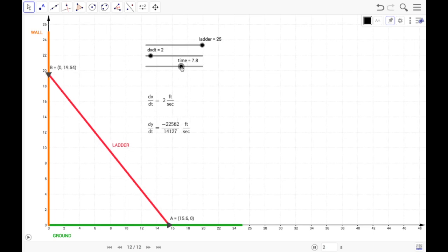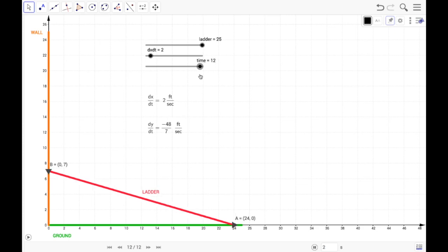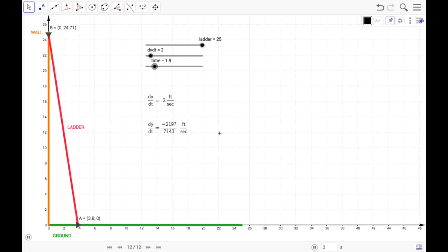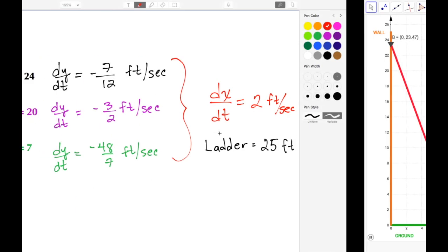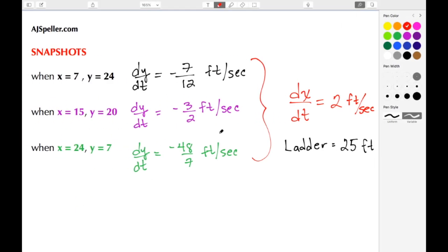So we come over, we want to set this all the way over to 24. And here we see that the x value is 24, the y value is 7, and we see the rate at which the ladder is falling - the top piece is falling - is at the negative of 48/7 feet per second. All right guys, well this sums up this video by ajspeller.com, and as always, thank you for watching.